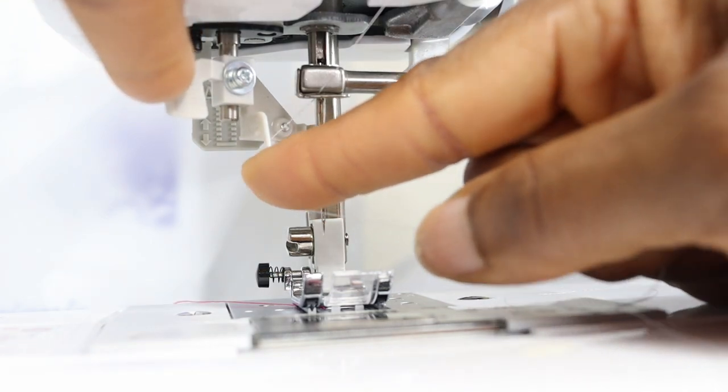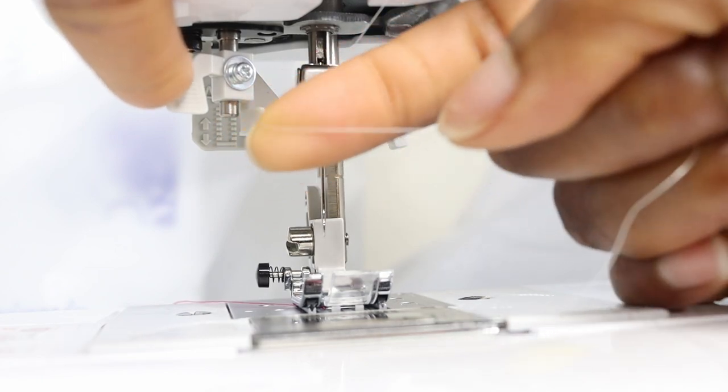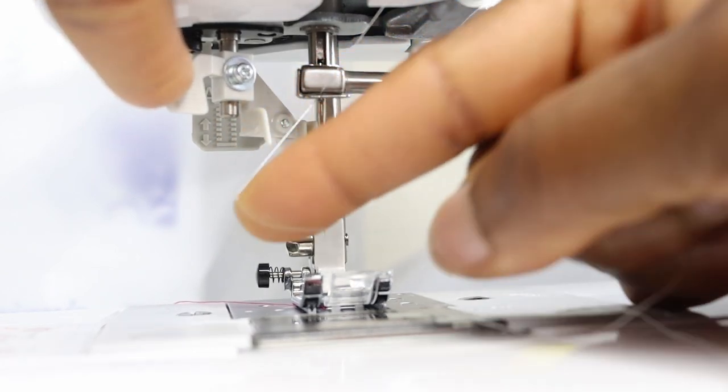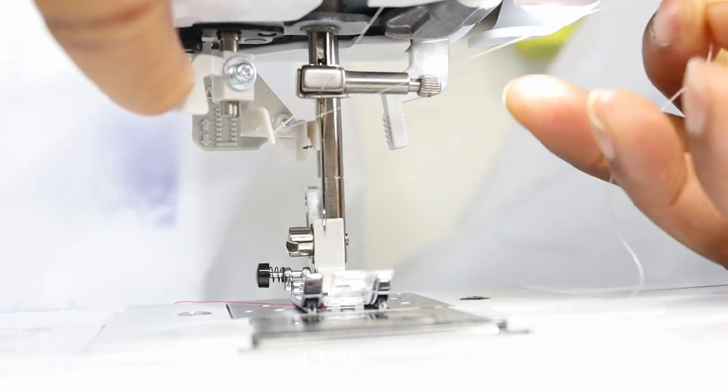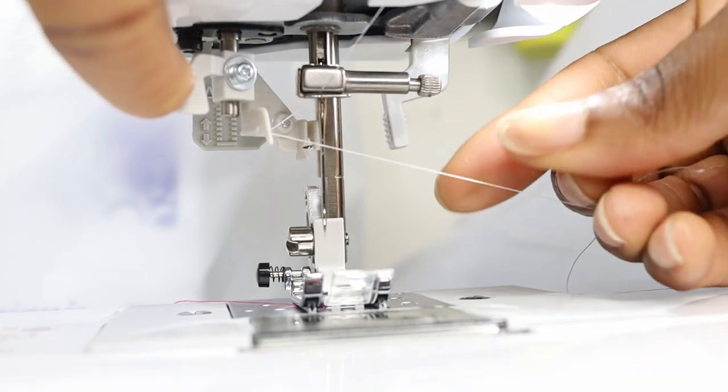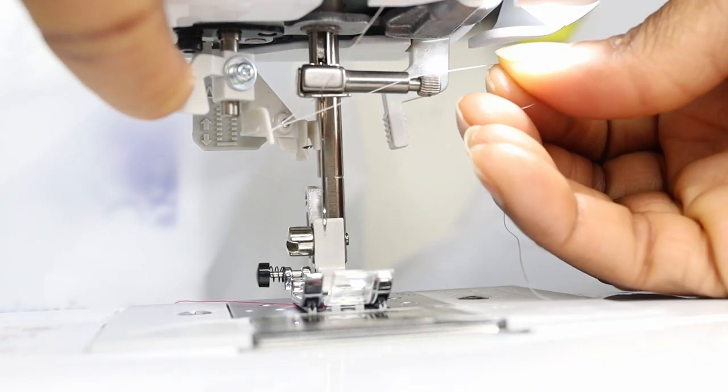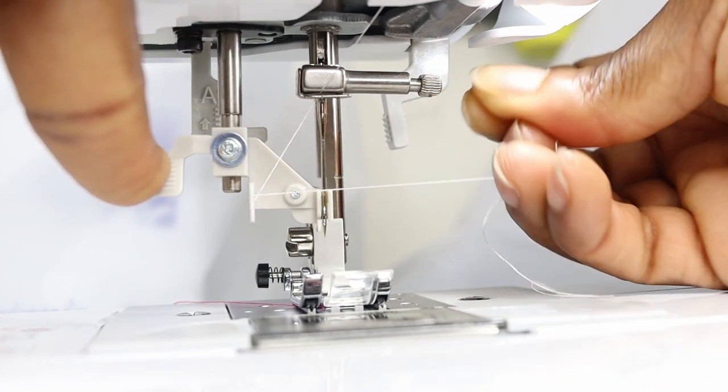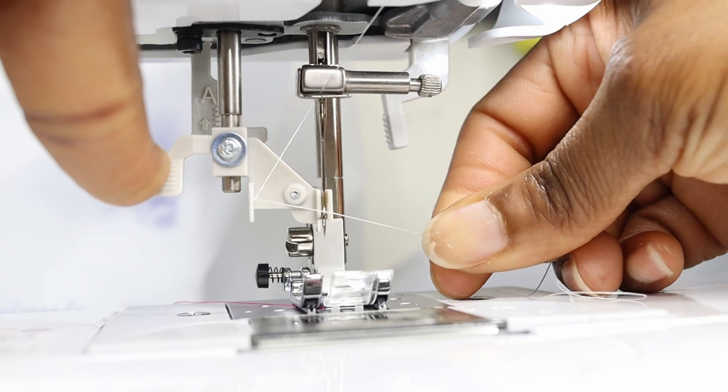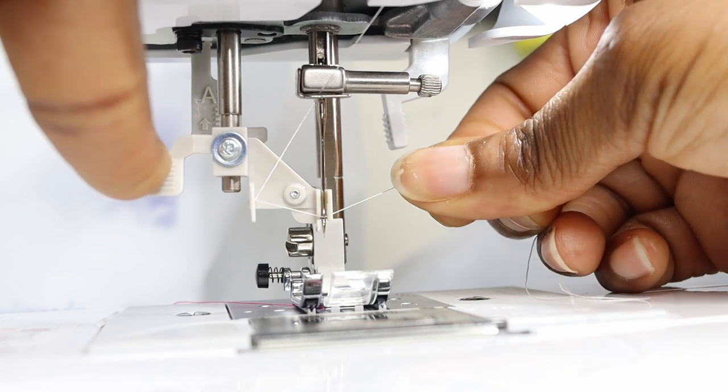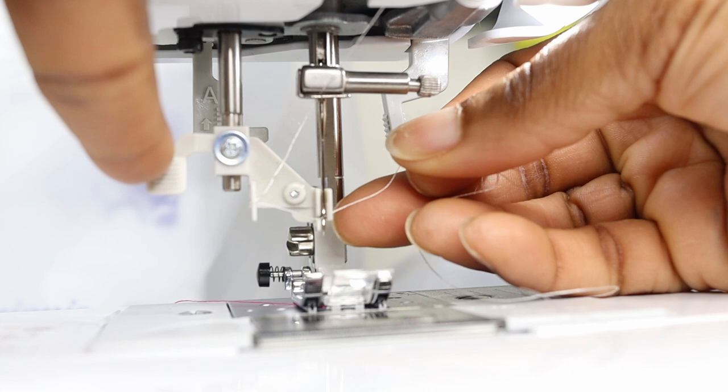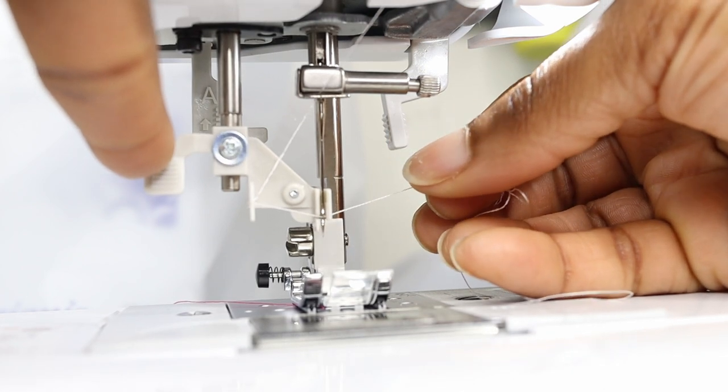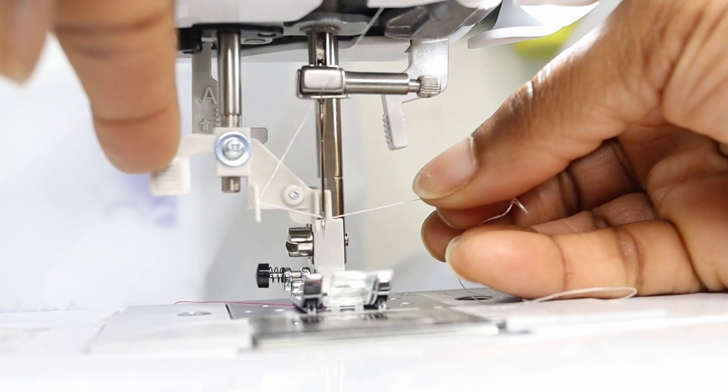Then I'm going to hook my thread on that guide, that little hook there, and then pull it tautly. I'm going to pull my needle threader down and push it back which is going to allow that hook to come through the eye. Hook my thread onto that and I'm just using my finger here to help keep the thread in place if possible.